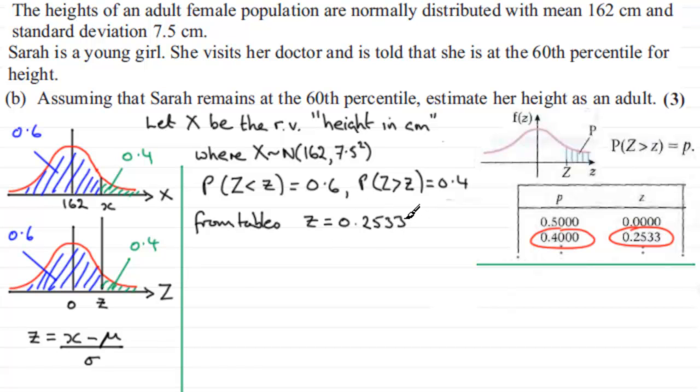And I can substitute this value into this equation. So therefore we've got 0.2533 for z equals the observed value, which we're trying to find here, call it X, minus the mean which is 162, all divided by the standard deviation which is 7.5. We've got that up here, or we put the variance of 7.5 squared. So standard deviation is 7.5. So it's just a question of rearranging this.